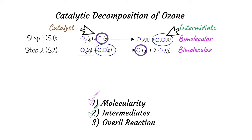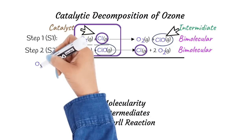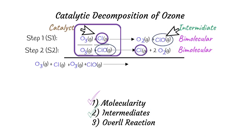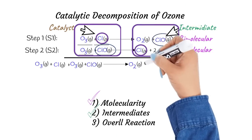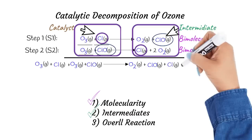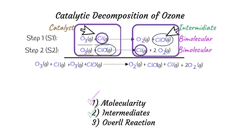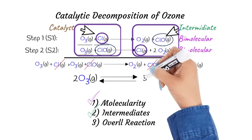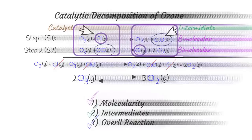Keep in mind that a catalyst is neither a reactant nor a product in the overall reaction. Now let's add up the two elementary steps to get the overall reaction. Placing all reactants on the left gives us O3, Cl, O3, and ClO. On the product side we get O2, ClO, Cl, and 2O2 molecules. We cancel out Cl and ClO because they appear on both sides, and we are left with 2O3 molecules on the reactant side and 3O2 molecules on the product side. Therefore our overall reaction is 2O3 → 3O2.